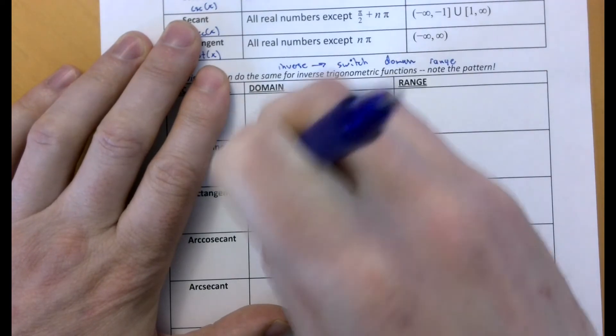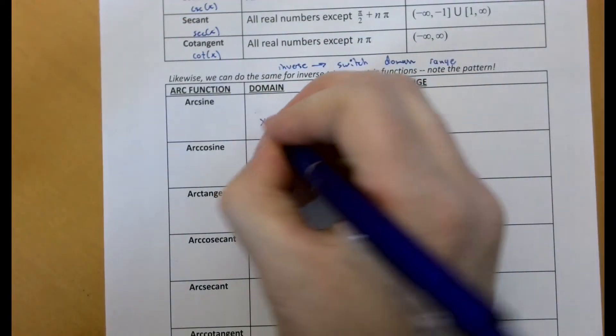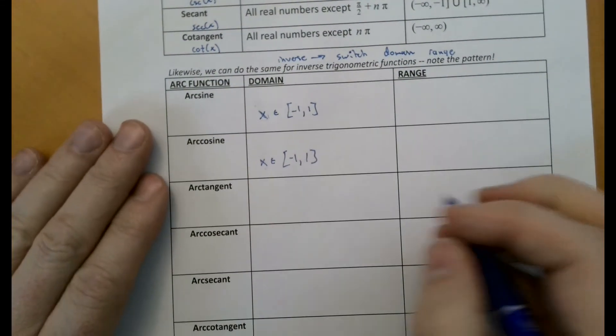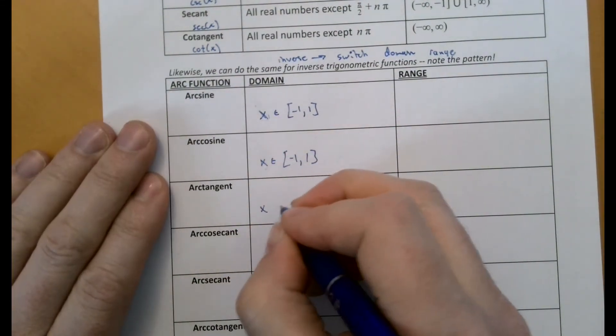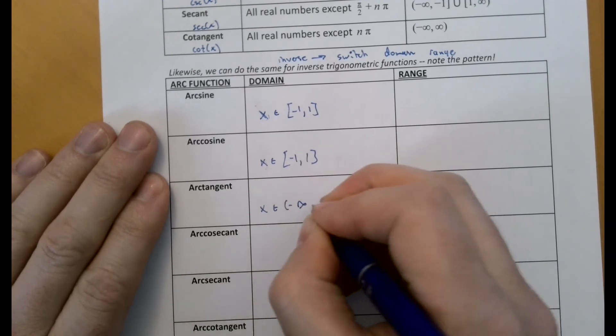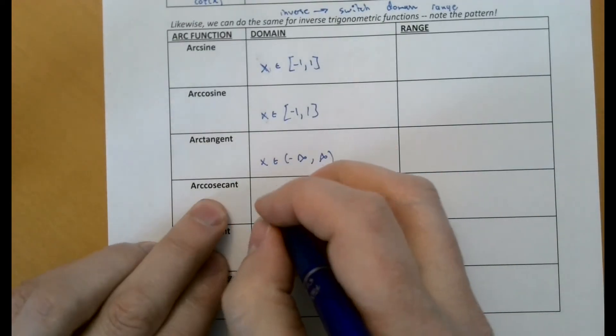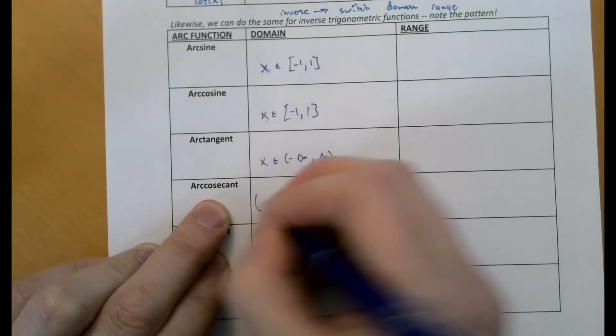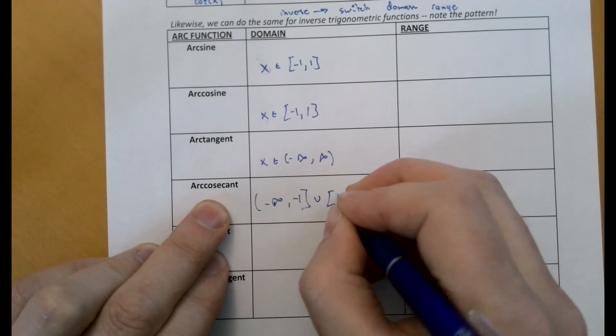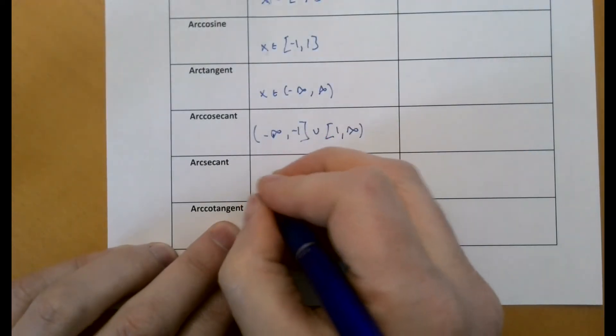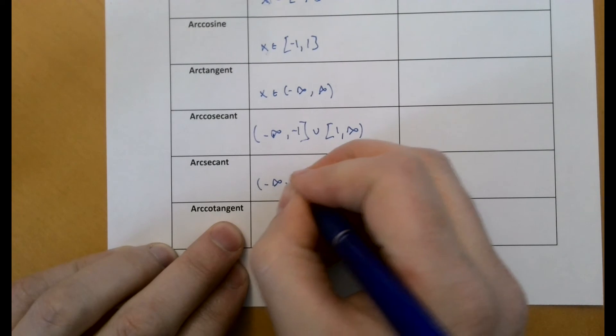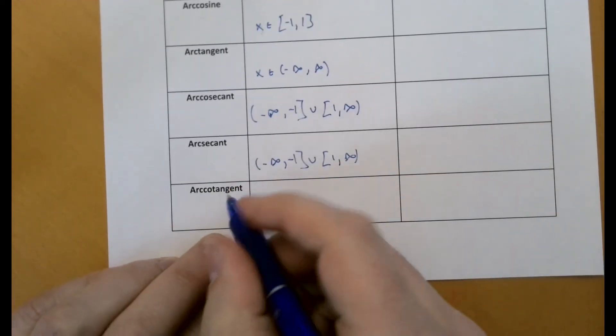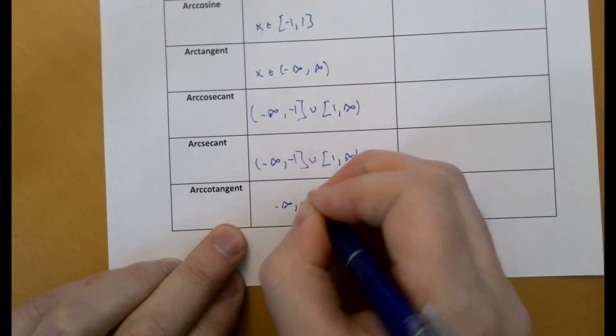Arc tangent is all real numbers for its inputs. Arc cosecant is all numbers except for the values in between negative one and one. And then arc secant, same thing. And then arc cotangent, or cotangent inverse, all real values.